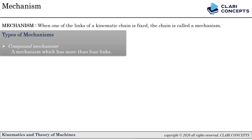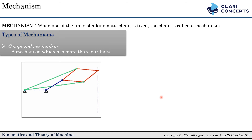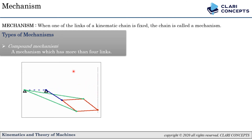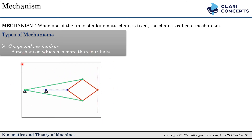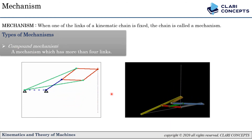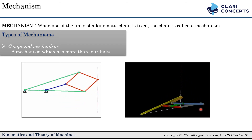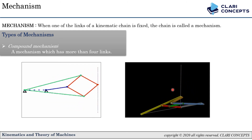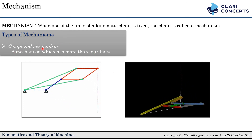A compound mechanism is one where the number of links is more than four. For example, this straight line mechanism has two green links, four red links, one blue link, and one fixed link — totaling eight links. Another example is a six-link mechanism with a fixed frame plus blue, green, red, orange, and yellow links. Both have more than four links, so they are compound mechanisms.